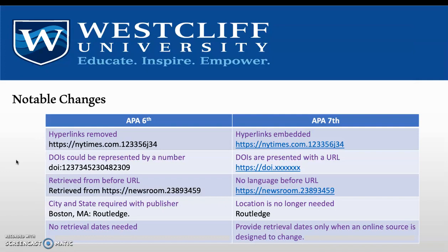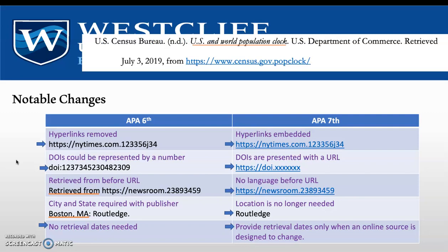Some notable changes between APA 6th edition and 7th edition. With 6th edition, hyperlinks were removed; with APA 7th edition, they are embedded, should be blue, underlined, and linked to a resource. With 6th edition, the DOI could be represented via a link or a set of numbers — now it is simply a link, and 'DOI colon' is not written before it. Previously, 'retrieved from' was written before the URL, but now no language is incorporated before the URL — it's simply the link. With books, we used to write the city and state before the publisher's name; now no location is required, just the publisher's name. With 6th edition, retrieval dates were not incorporated, but with 7th edition we do use them, only when the online source is designed to change, such as a website for a world population clock.